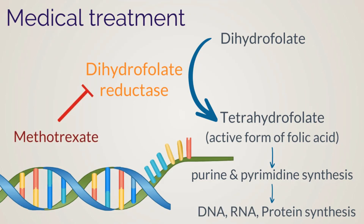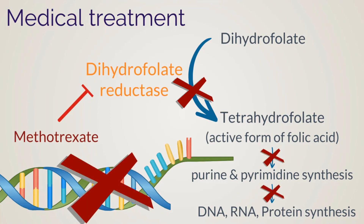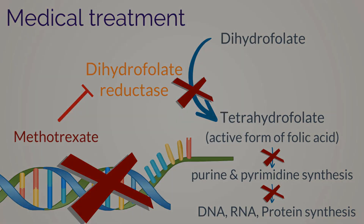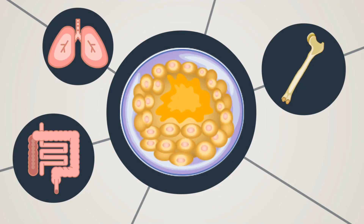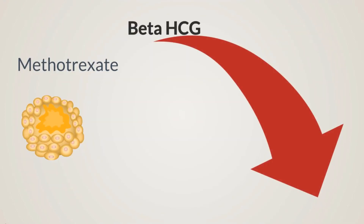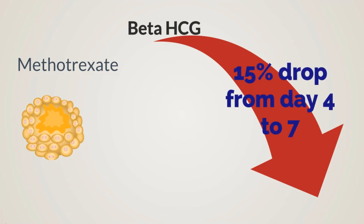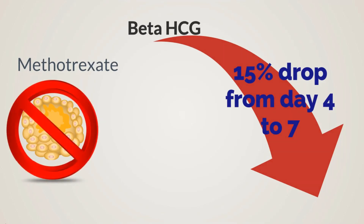Methotrexate competitively binds to the enzyme dihydrofolate reductase, blocking the conversion of dihydrofolate to tetrahydrofolate and inhibiting the synthesis of purines and pyrimidines, leading to arrest of DNA, RNA, and protein synthesis. It is very effective against rapidly proliferating tissues such as trophoblasts and results in ectopic pregnancy resolution. However, because of its action on rapidly proliferating tissue, it can also affect normal tissues with rapidly dividing cells, such as bone marrow, GI epithelium, and respiratory epithelium. Beta-HCG levels must be followed after methotrexate administration, with an expected 15% drop in levels between days 4 and 7, and continued monitoring needed to confirm resolution of the pregnancy.